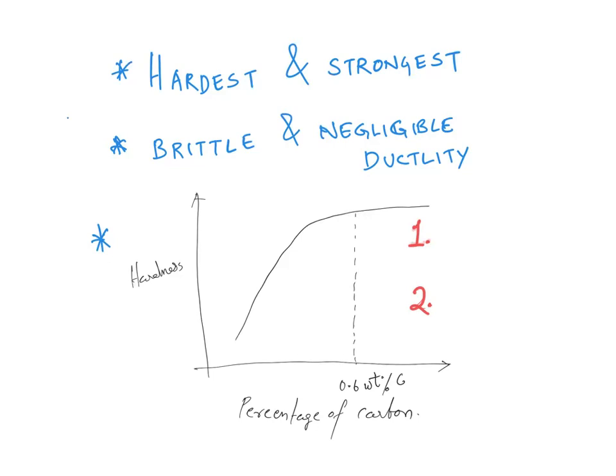Among all the various microstructures that may be produced for a given steel alloy, martensite is the hardest and the strongest. That implies it will be brittle and will have negligible ductility. That's why we use a heat treatment process like tempering, because at this condition it is not good for any real-life application. We use a heat treatment process called tempering to modify its properties, which we will discuss in the next video.